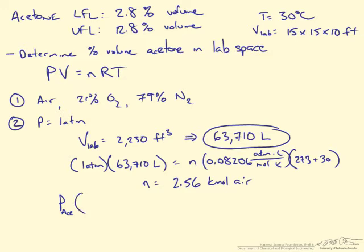So we could repeat the same calculation using an unknown pressure of the acetone, in this case the partial pressure of acetone times the volume of the lab. This is going to be the moles of acetone that evaporates times the gas constant R and the temperature that we already know.